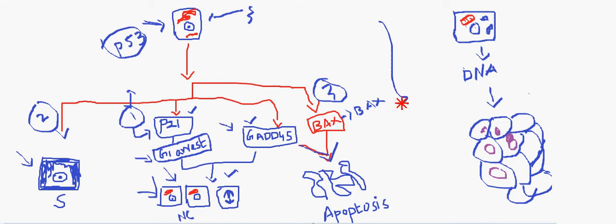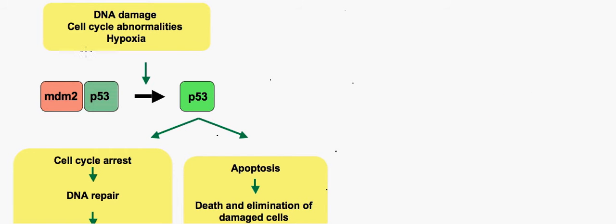These are the basic functions of the p53 gene. The next picture shows what happens when there are mutations or loss of p53. Now looking at another diagram: initially when there is DNA damage or any cell cycle abnormality causing hypoxia or some kind of stress to the cell, this brings about DNA damage, and we can see that p53 gets activated here.